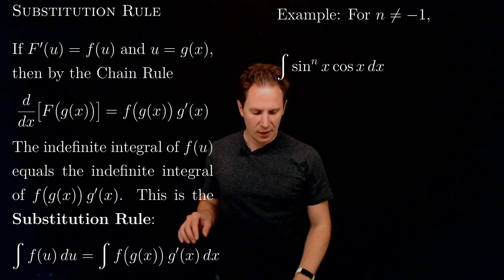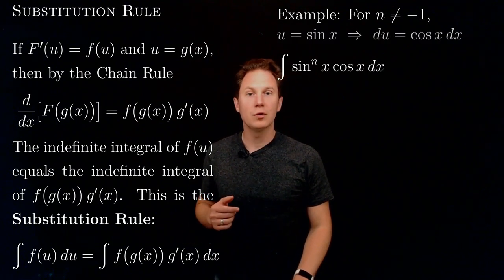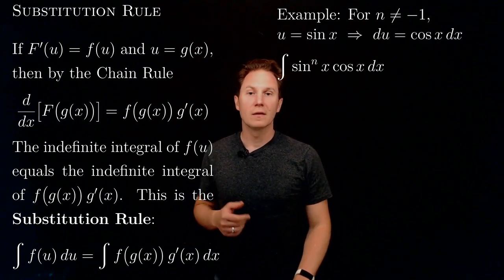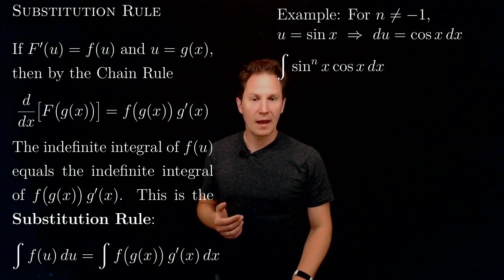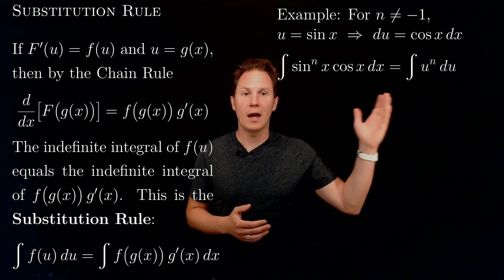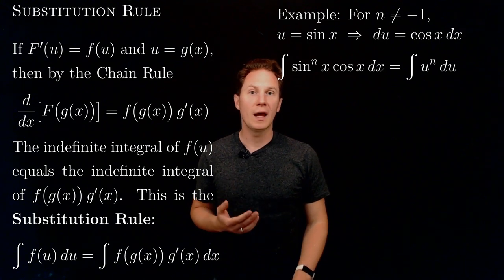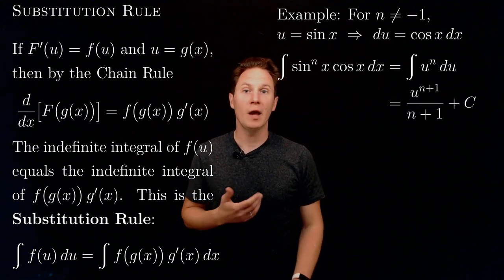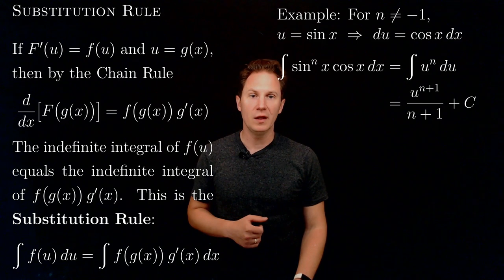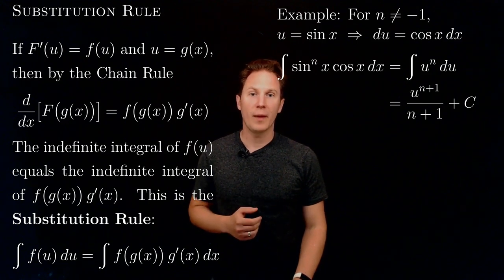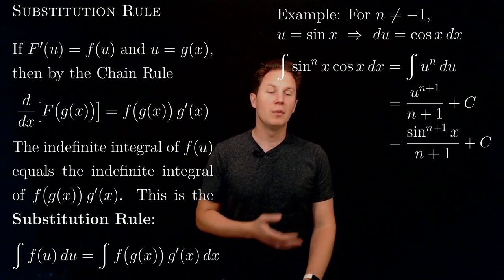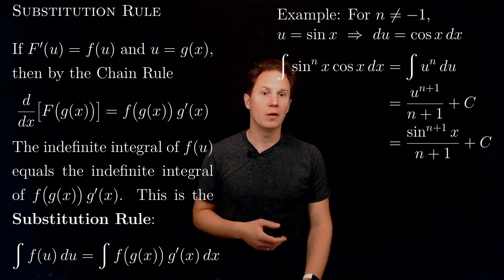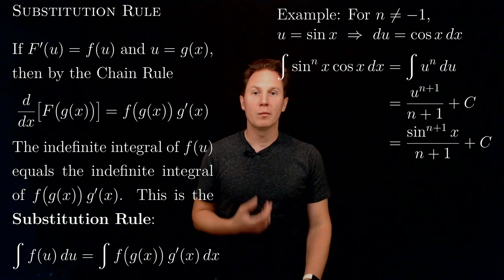This suggests that we should introduce the substitution u = sin(x). That lets us write cos(x) dx as du. We can then express the integral as the integral of u^n du, which by the power rule is u^(n+1) / (n+1) + C. Substituting sin(x) back in for u, we get sin^(n+1)(x) / (n+1) + C.